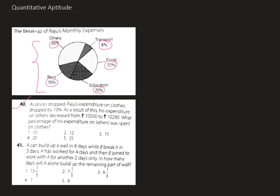The first question: As prices dropped, Raju's expenditure on clothes dropped by 10%. As a result of this, his expenditure on others decreased from ₹10,500 to ₹10,290. What percentage of his expenditure on others was spent on clothes? Let's try to solve this question.